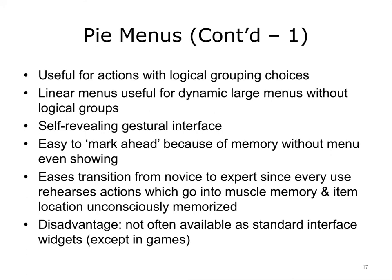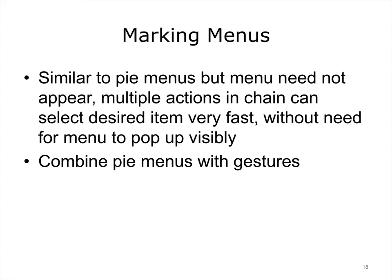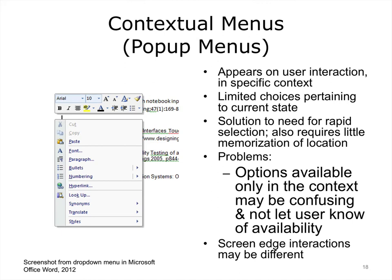One disadvantage is that outside of games, this type of menu is not often available in software. Marking menus combine the advantages of pie menus and gestures. Contextual menus are very common, particularly in the Windows operating system. They are launched by a specific user interaction, such as a right click of the mouse. Contextual menus offer a set of limited choices pertaining to the current state of the system, usually pertaining to an object selected by the mouse action. It is fairly rapid and also requires little memorization of item locations. Some applications may only make options available in some contexts, which can cause problems in letting users know that the options are available or cause confusion. Screen edge interactions may be different than those when the object is located in the center of the screen.